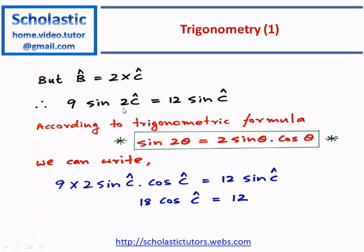Sine 2C becomes 2 sine C cos C equal to 12 sine C. Now we can take away sine C from both sides, and then 18 cos C equal to 12. Therefore cos C equal to 12 over 18, or further simplification gives us cos C equal to 2 over 3, and that is the answer.